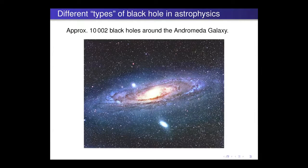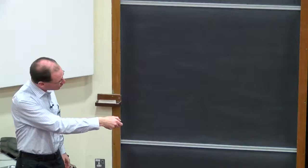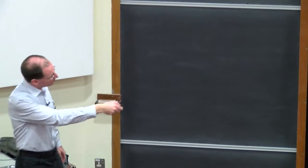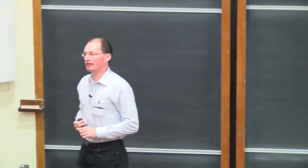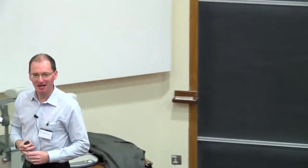Here is a picture of our nearest neighbor, our nearest big neighbor, the Andromeda Galaxy. You see its companion M32, and then this boring galaxy NGC 205, and the many stars around this. In this picture, there are roughly 10,000 to 2 black holes.